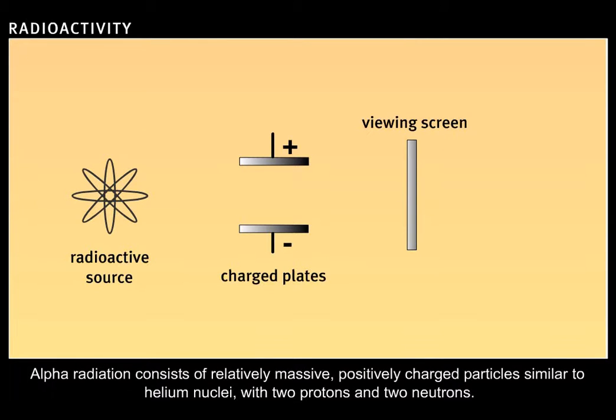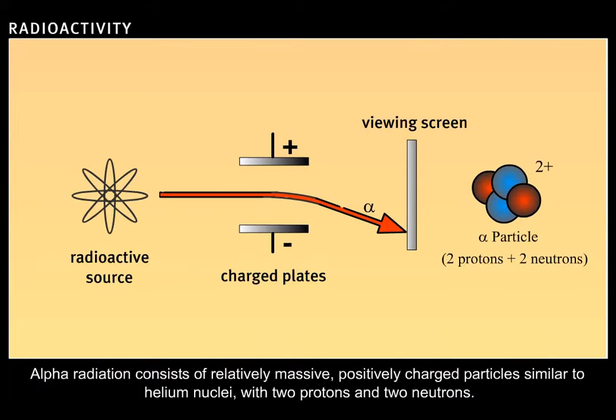Alpha radiation consists of relatively massive, positively charged particles, similar to helium nuclei, with two protons and two neutrons.